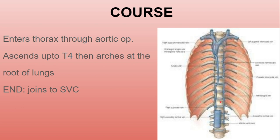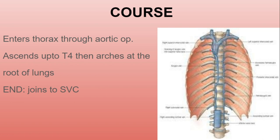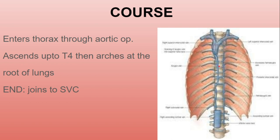Regarding the course of the azygous vein: it enters the thorax by passing through the aortic opening and ascends up to T4 — the fourth thoracic vertebra — where it arches at the root of the right lung and joins the superior vena cava at its posterior side, before the SVC pierces the pericardium.